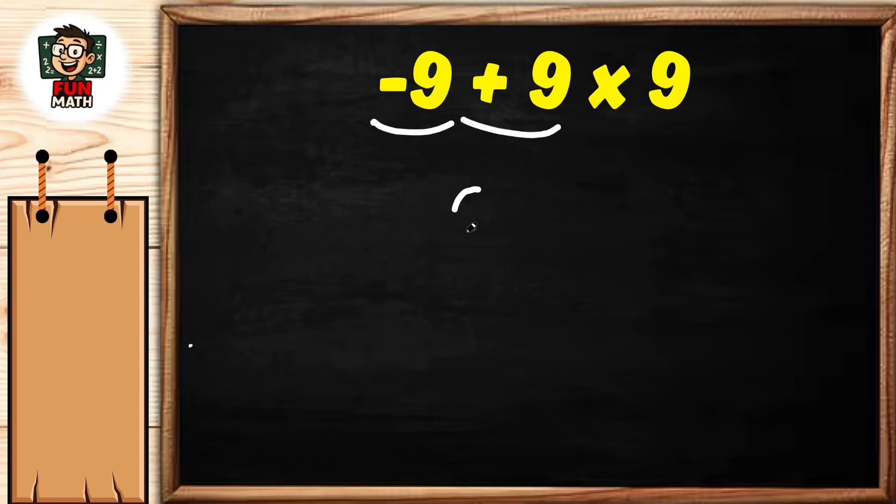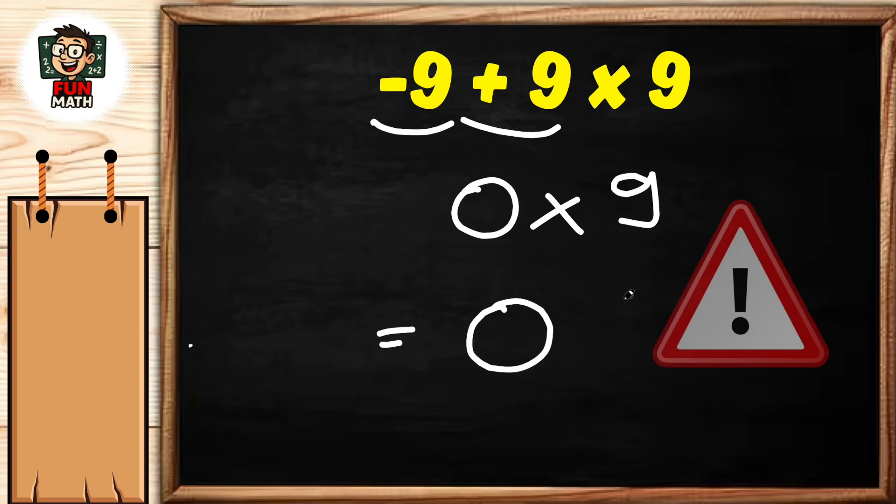Negative 9 and positive 9 equals 0. Now 0 times 9 equals 0. If you solve the question this way, you solved it incorrectly.